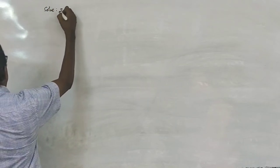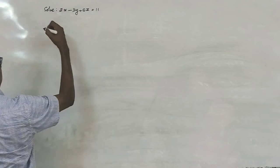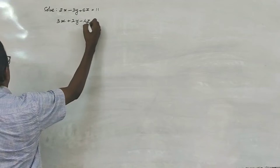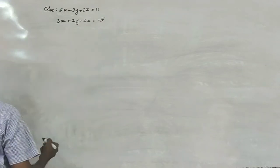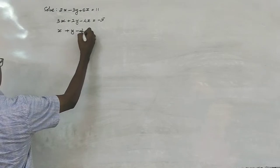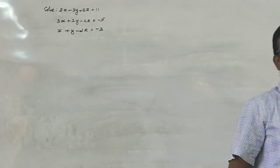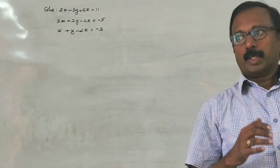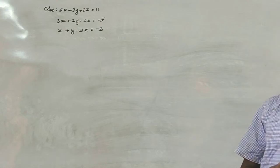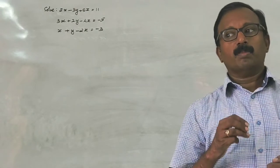Solve: 2x minus 3y plus 5z equals 11, second equation is 3x plus 2y minus 4z equals minus 5, and third equation is x plus y minus 2z equals minus 3. I am taking 3 equations in 3 unknowns. Number of equations depends on number of unknowns. If we have to find 2 unknowns, then we require only 2 equations. If we have to solve 3 unknowns, we require only 3 equations.